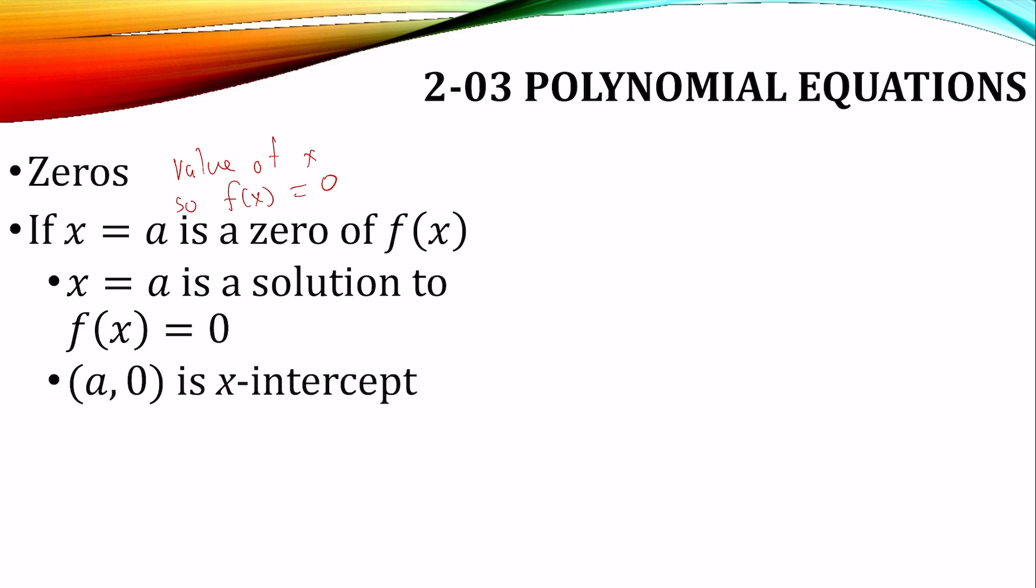If they're real numbers, a zero then would be an x-intercept. That's where it crosses the x-axis. And x minus a would be a factor of the function.